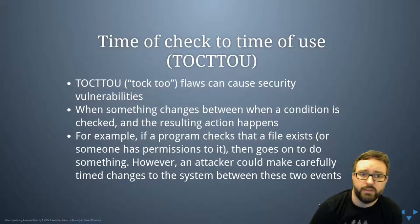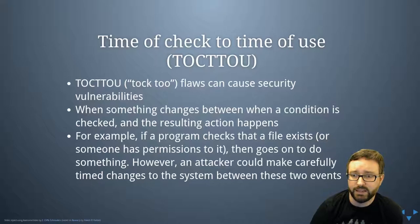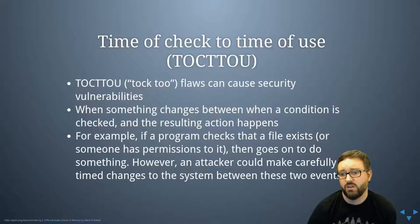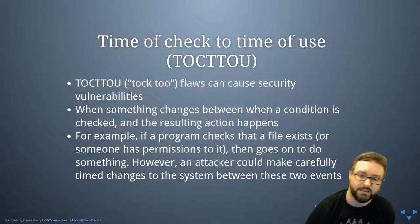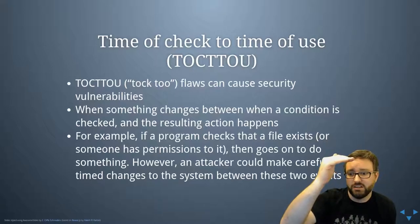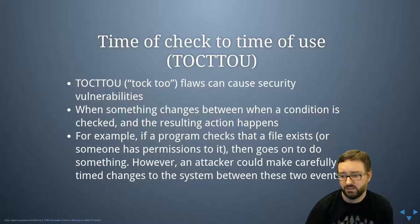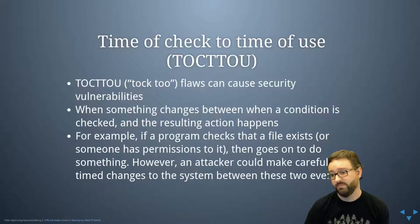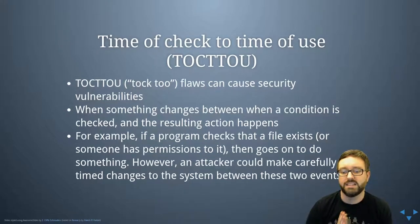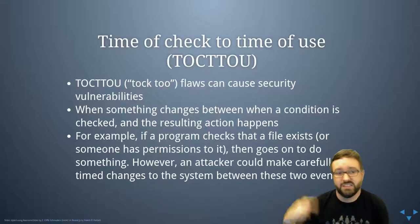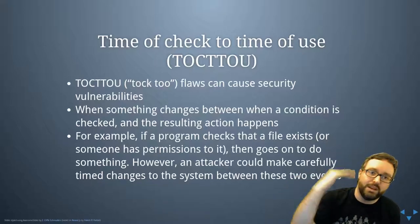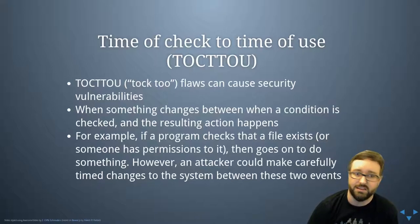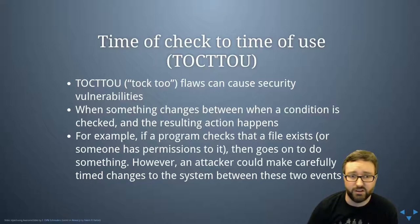One of the most common kinds of race condition vulnerability is a Time of Check to Time of Use, or TOCTOU, vulnerability. That basically happens when something changes between when we check a condition and then we have our resulting action. For example, if a program checks that a file exists or that someone has permission to it, and then as a separate instruction the computer does something, an attacker could carefully time — or just spam the system — to do something in between those two instructions executing, completely violating the intended security decision logic.